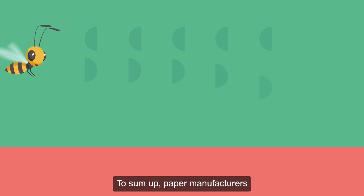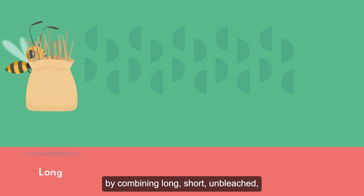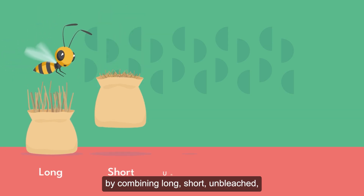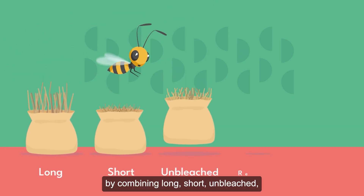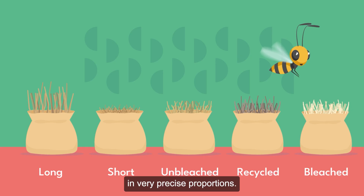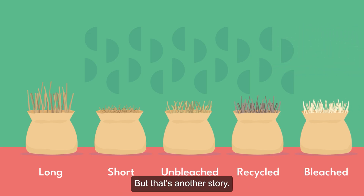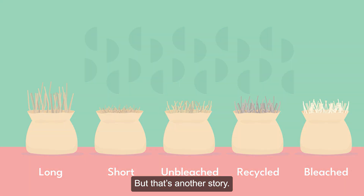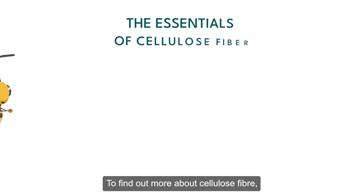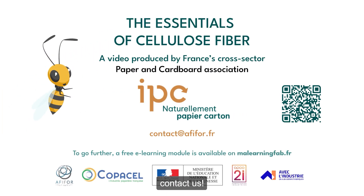To sum up, paper manufacturers must first create the ideal mixture by combining long, short, unbleached, bleached, and recycled fibers in very precise proportions. All that remains is to add water. But that's another story. To find out more about cellulose fiber, contact us.